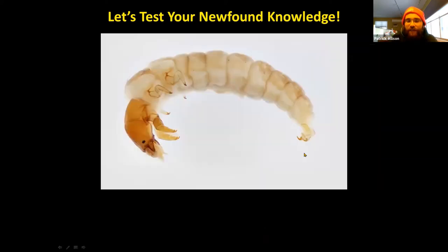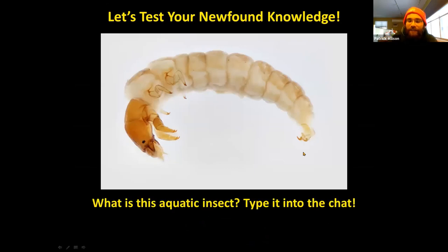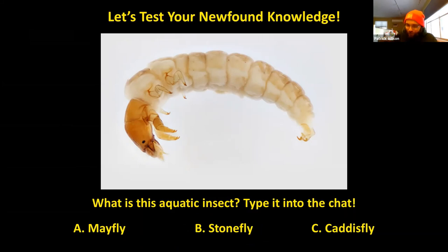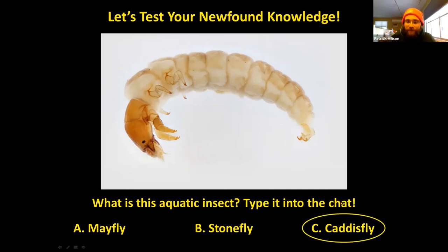Next question: what is this aquatic insect — a mayfly, a stonefly, or a caddisfly? People are going with C, caddisfly — and that is correct! This is a caddisfly. It has the very caterpillar-like body, highly sclerotized head, and the little butt hooks in the back.